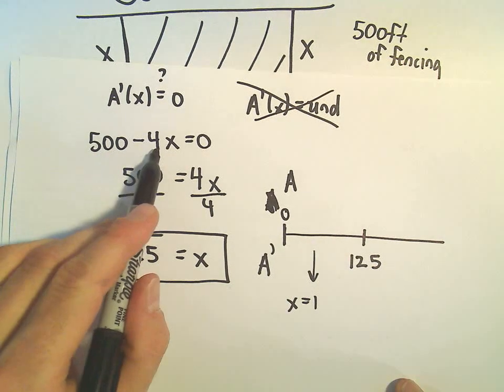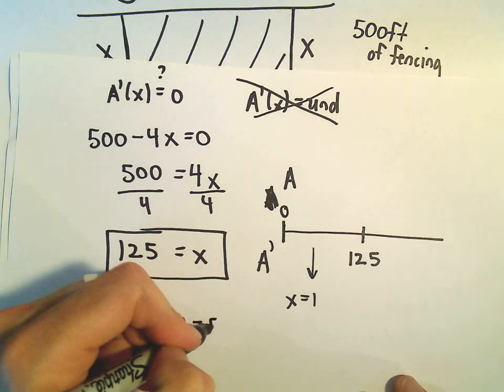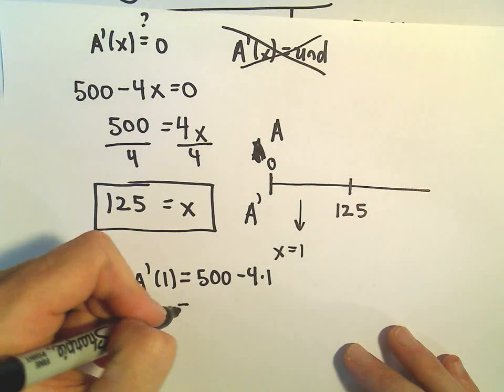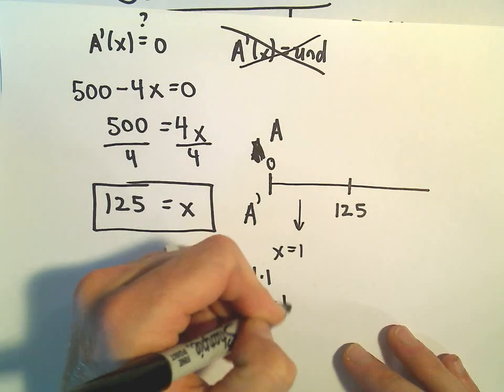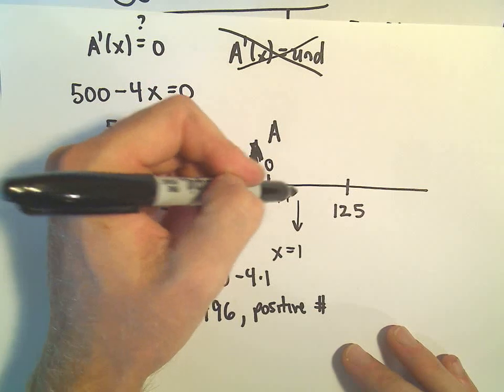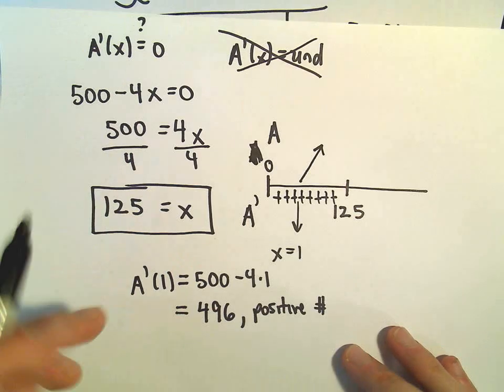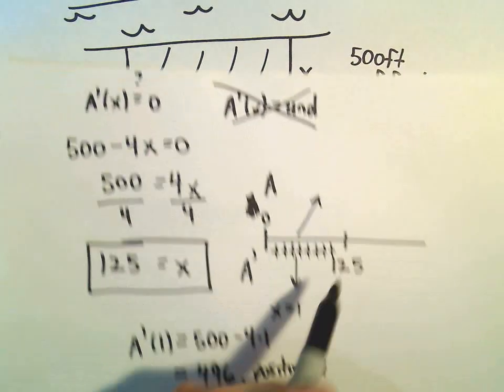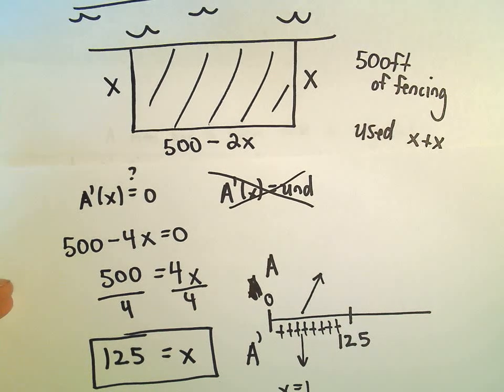Our derivative was 500 minus 4x. So if we plug 1 into our derivative, we would just get 500 minus 4 times 1. And the main thing to catch is, let's do it. It's 496, which is a positive number. And since the derivative is positive over that interval, it tells me that the original function is increasing. So as x increases, as this gets bigger, bigger, bigger, bigger, up to 125, it says the overall area of the rectangle is also increasing.